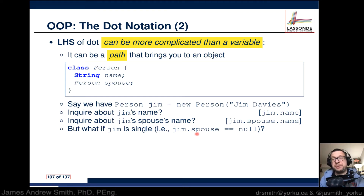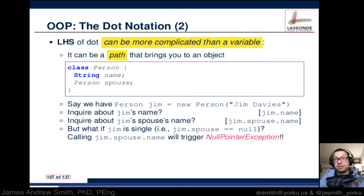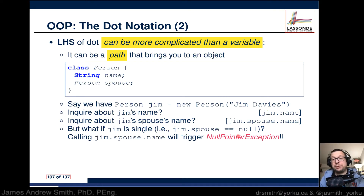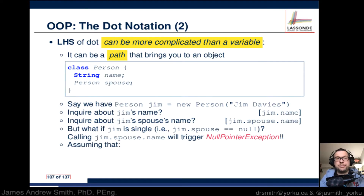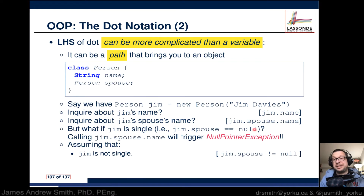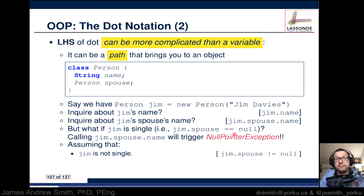What if Jim is single? That is, if Jim.spouse is null, and we tried this, we would trigger a NullPointerException — basically an error. So we would want to test for something like this: we would check that Jim.spouse is not equal to null before calling Jim.spouse.name to find out Jim's spouse's name.